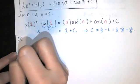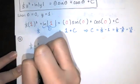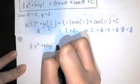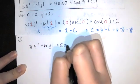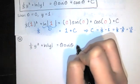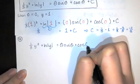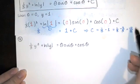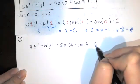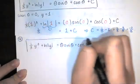You have one third y cubed plus natural log of the absolute value of y equals theta sine of theta, plus cosine of theta, plus c, but you replace c with the negative two thirds. So that's one version of the answer.